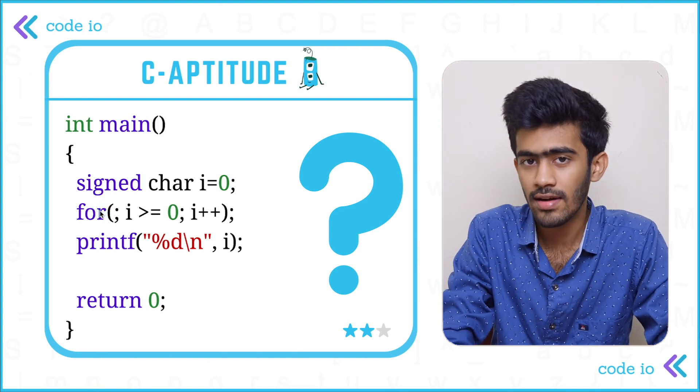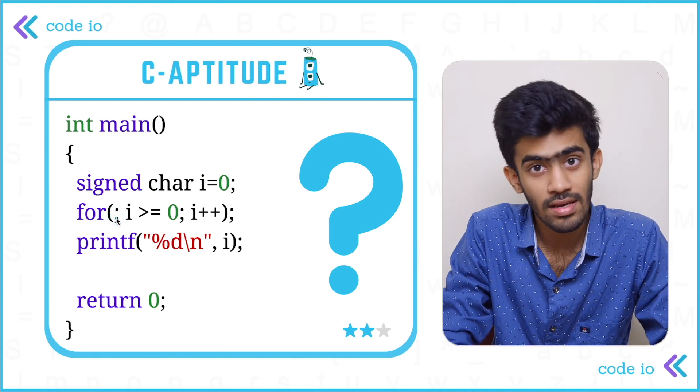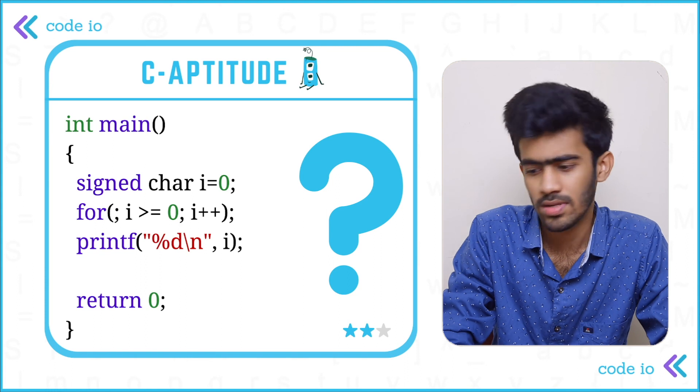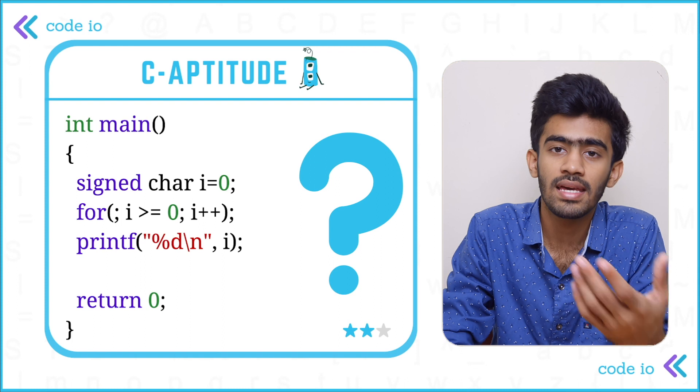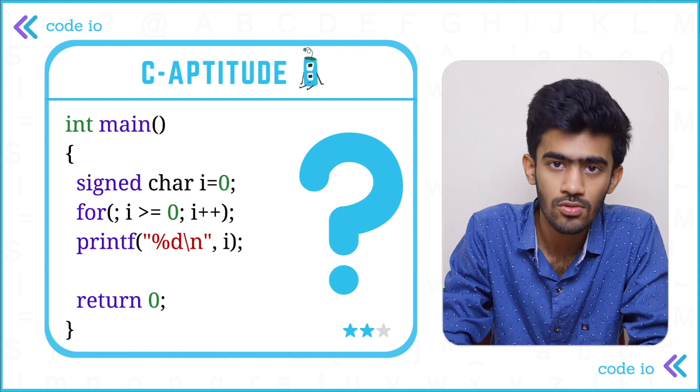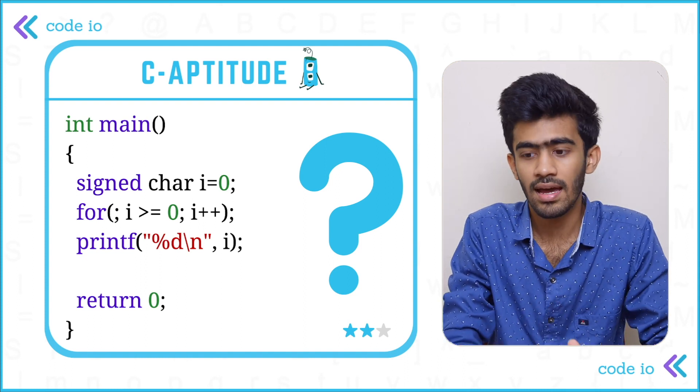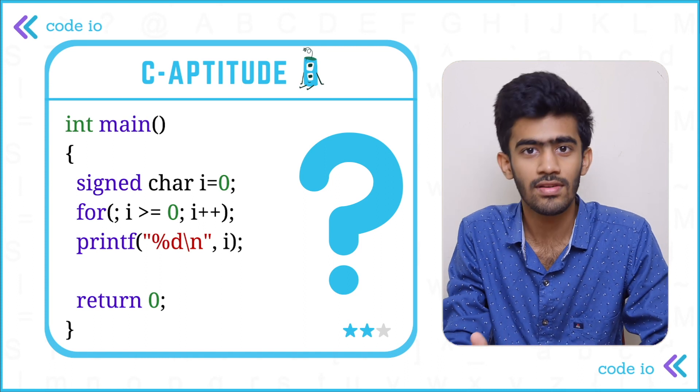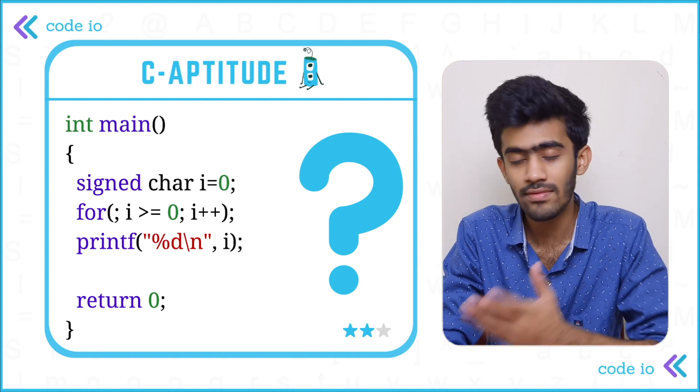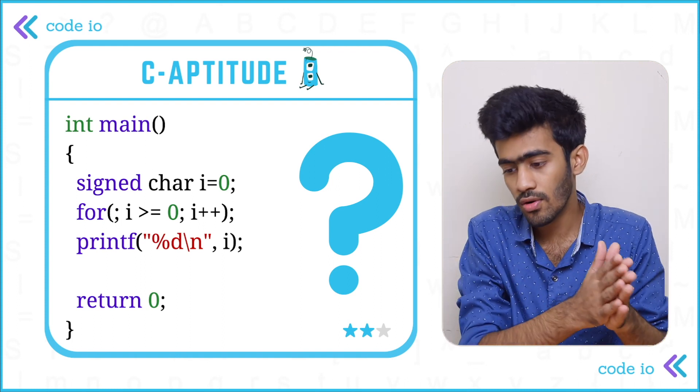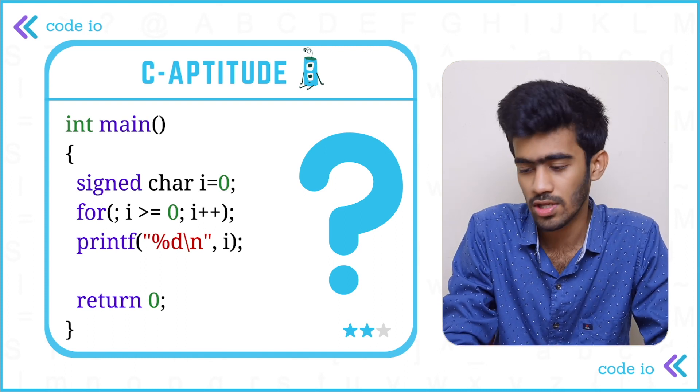For loop - we have no initialized statement here, just a semicolon. i is greater than or equal to 0 is the condition, and we have i plus plus and that's a semicolon again. So there are no statements being executed if this for loop condition is true. We had a similar question in the last episode where we explained it clearly that it doesn't matter whether we have statements to be executed if the condition is true or not. If we have a semicolon, it will just iterate through the whole value of i's and skip to the next iteration when it goes false.